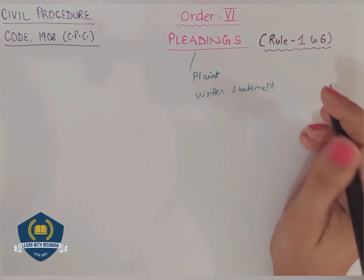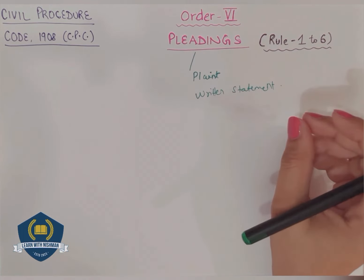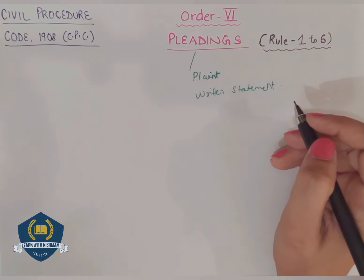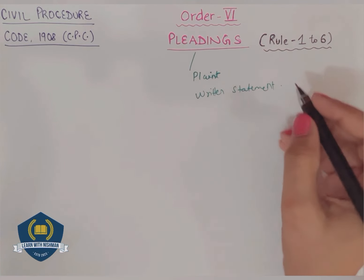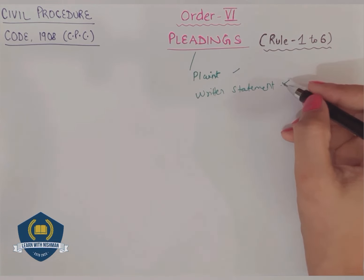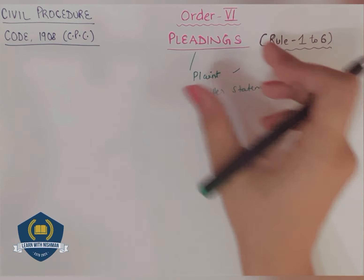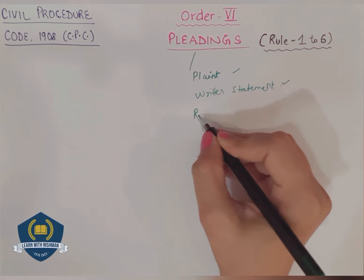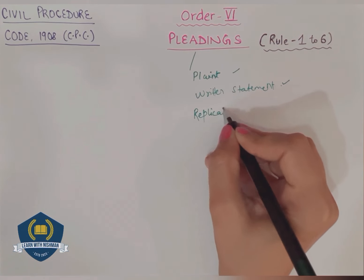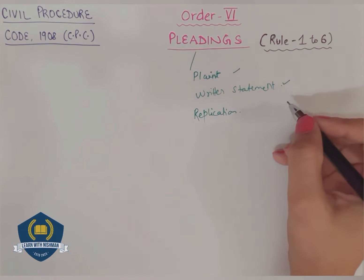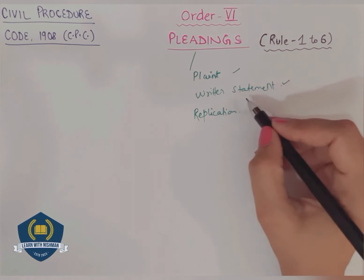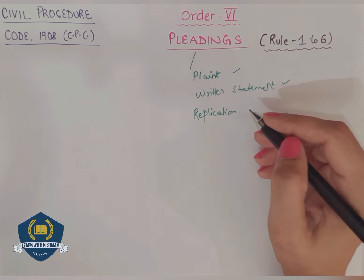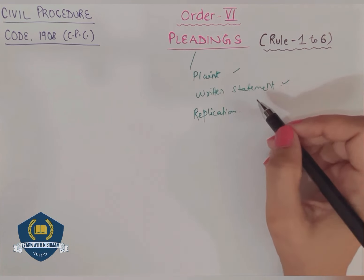But there is not only plaint and written statement - there can be so many other things which will be considered to be pleadings. Plaint and written statement to hain hi - but along with these, there are many more things included in pleadings. They are replications. Replication kya hoti hai? In reply to the written statement, plaintiff files a replication, and that is called a pleading.